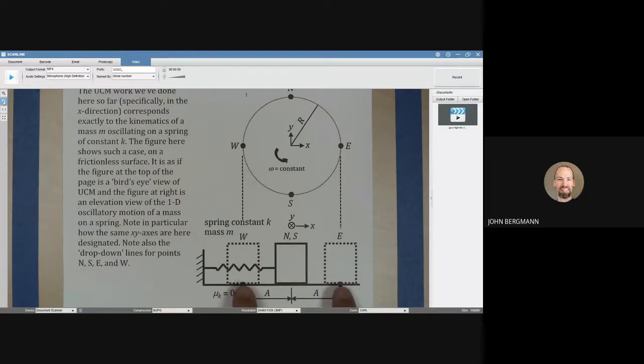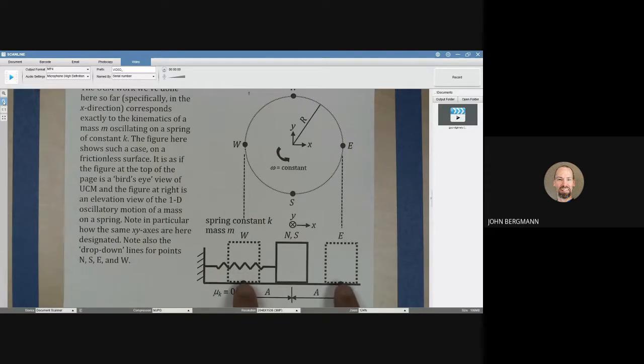And the reason that the accelerations are a maximum is because the net force, which is the elastic force in the spring, is maximized there. We're assuming no friction here. When the force is maximized, that is when the spring is maximally stretched or maximally squished, then the acceleration is going to be a maximum.